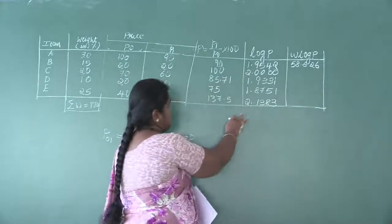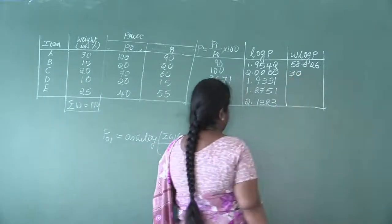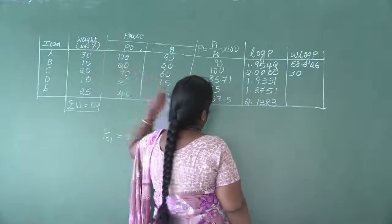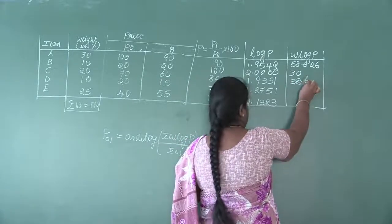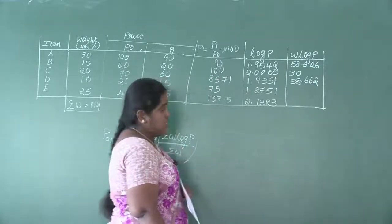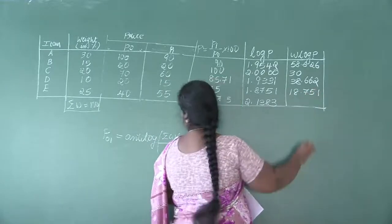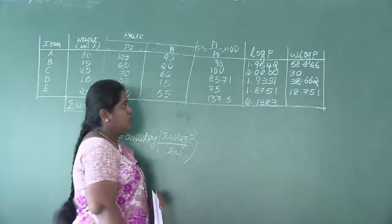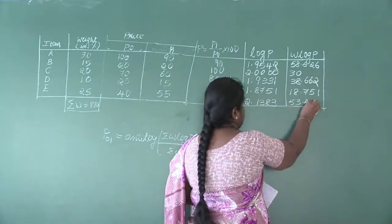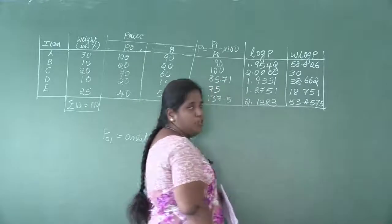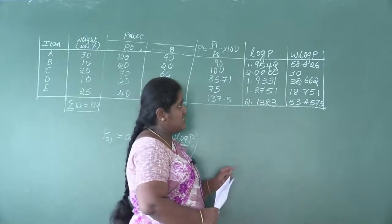Next: 15 × 2.0000 = 30. Then 20 × 1.9331 = 38.662. Next W value is 10, so 10 × 1.8751 = 18.751. The last value: 25 × 2.1383 = 53.4575. Now add all W×log P values: 58.626 + 30 + 38.662 + 18.751 + 53.4575 = 199.4965.